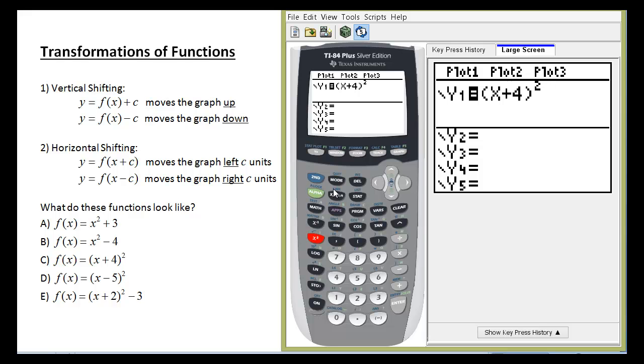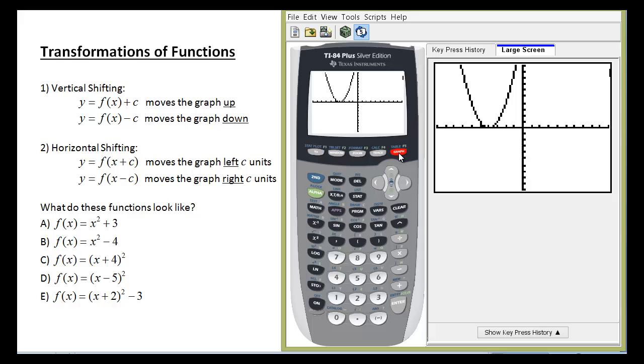Now, here's the thing. You might think that a plus 4 moves the graph four places to the right. Well, that's not the case. You see what happened? It moved it four places to the left, all right? So horizontal shifting is counterintuitive. It works in the opposite direction of what you might think.